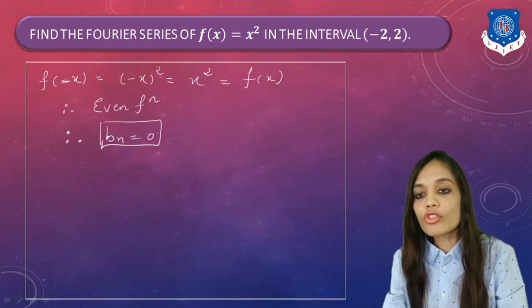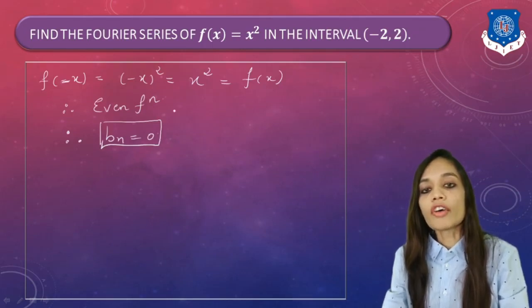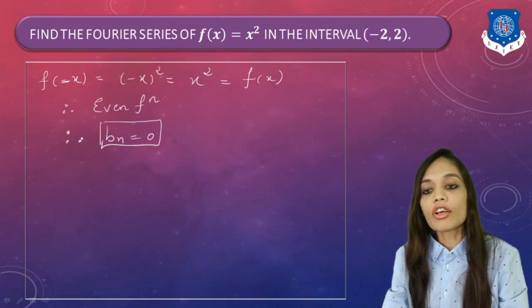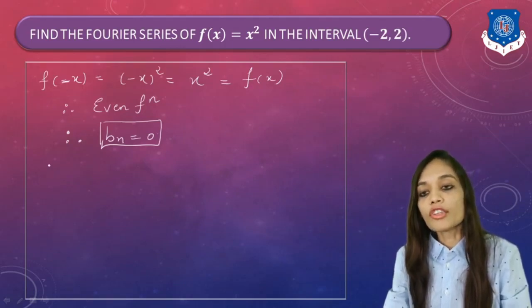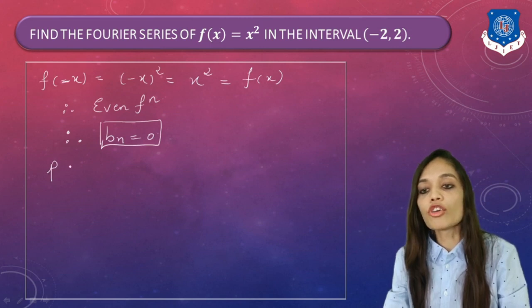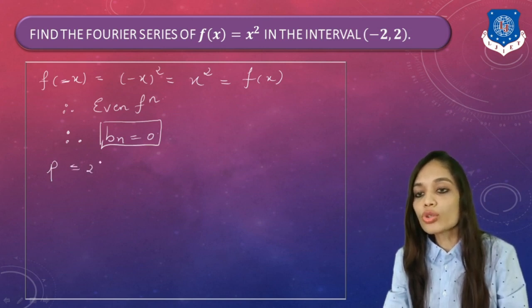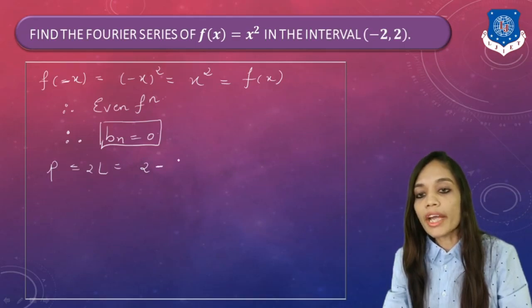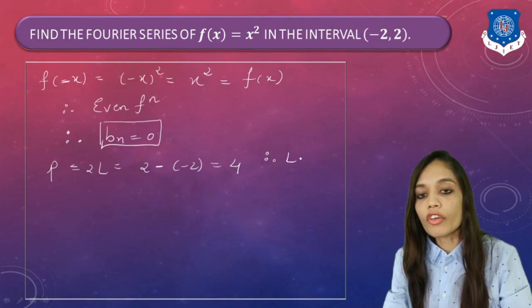Before finding A0 and An, we first find the value of L. The period P = 2L = 2 - (-2) = 4, so our value of L = 2.